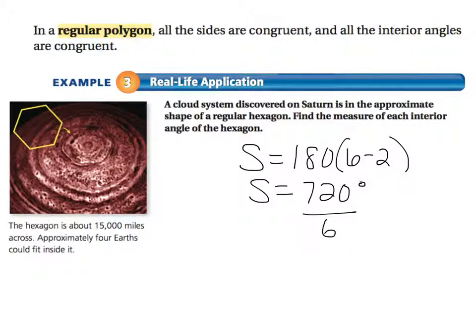Divided by 6, since they're all equal. Each angle is equal to 120 degrees. Each interior angle is 120 degrees.